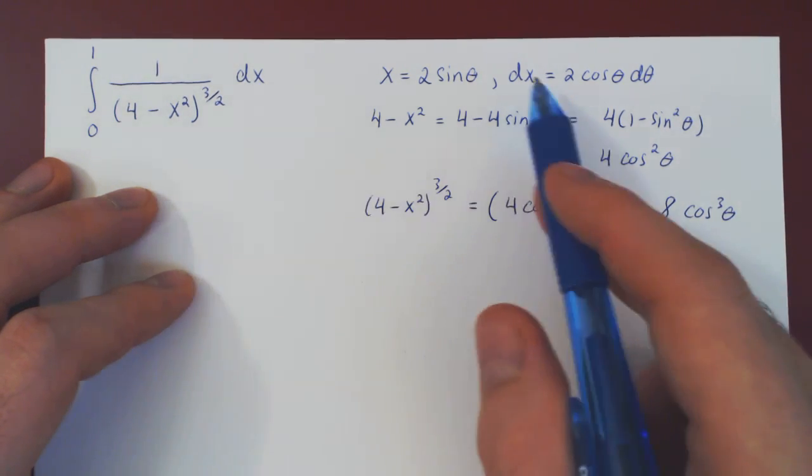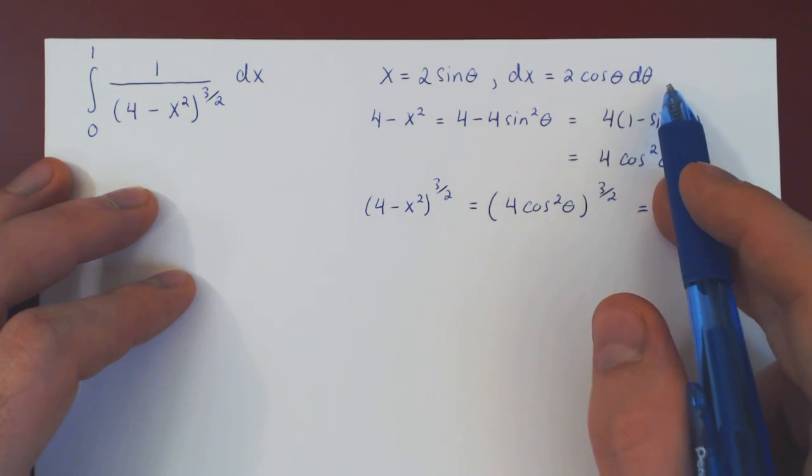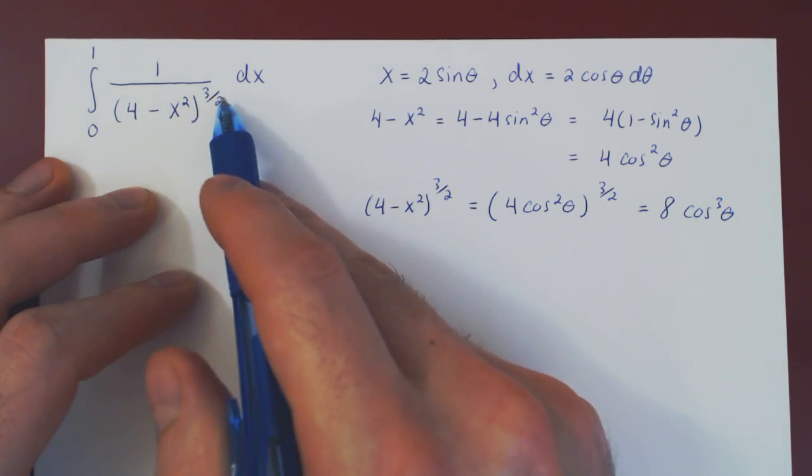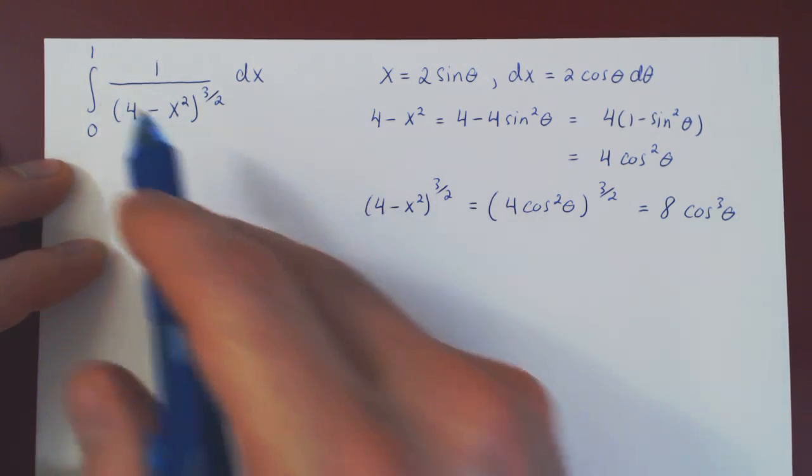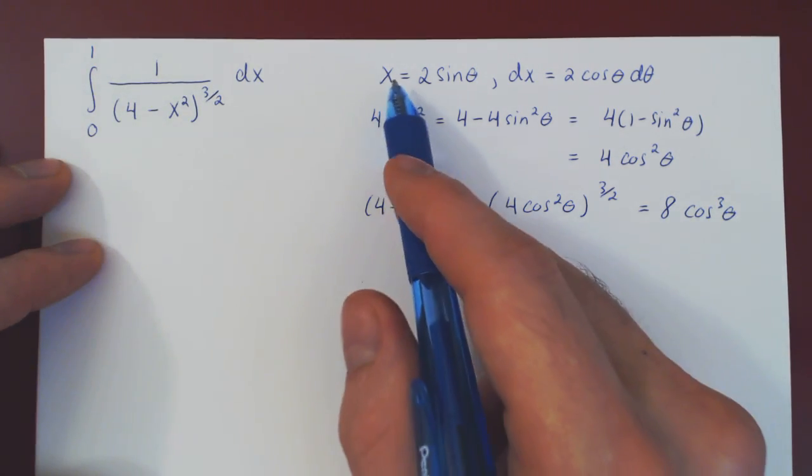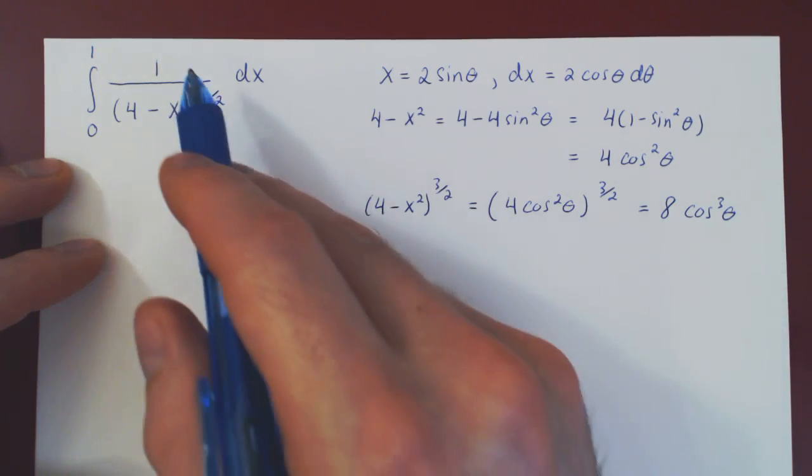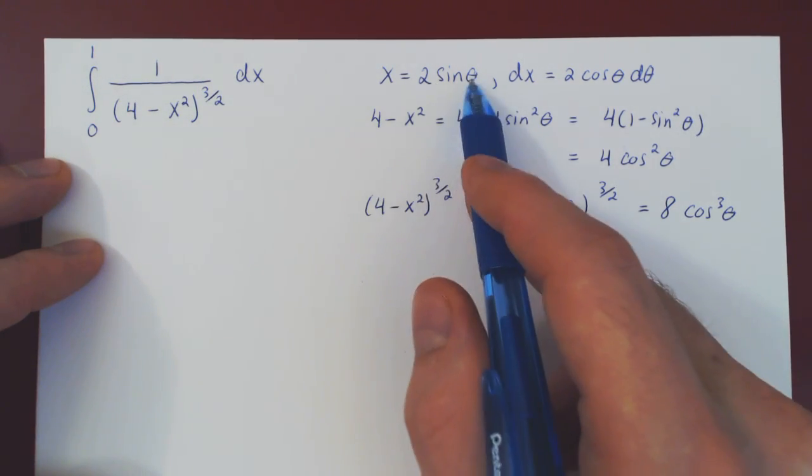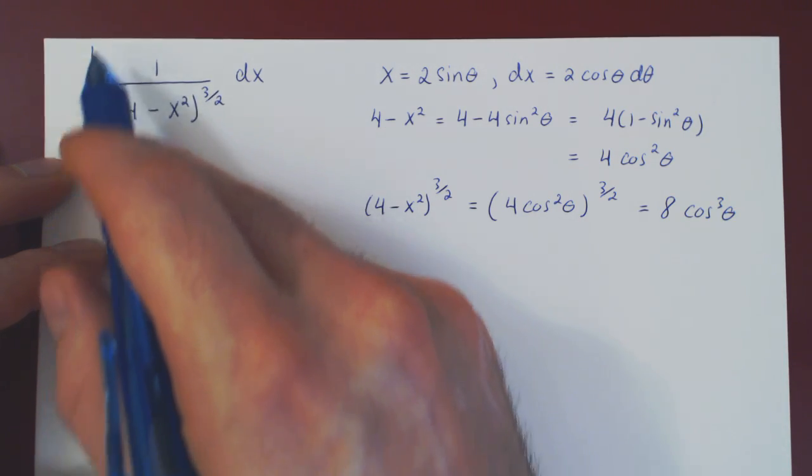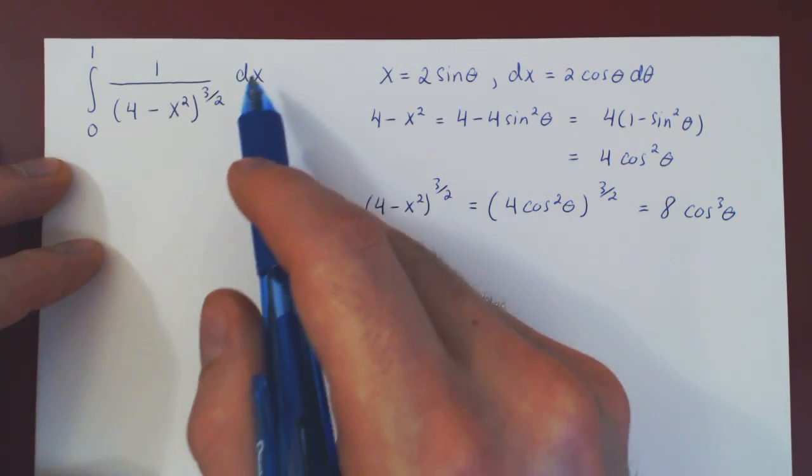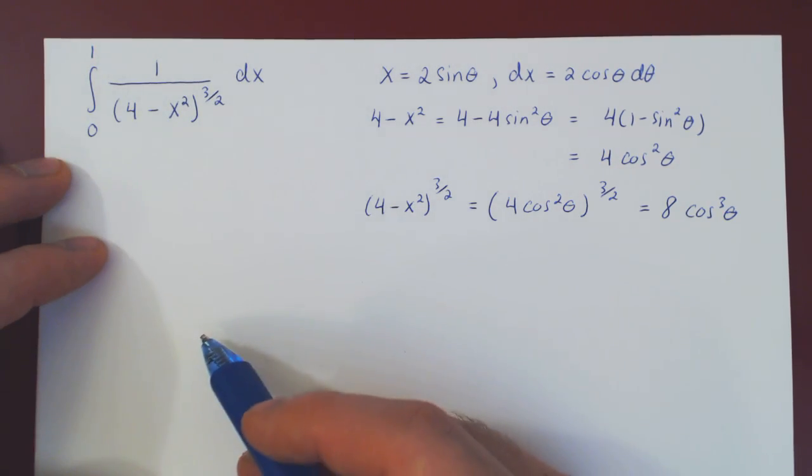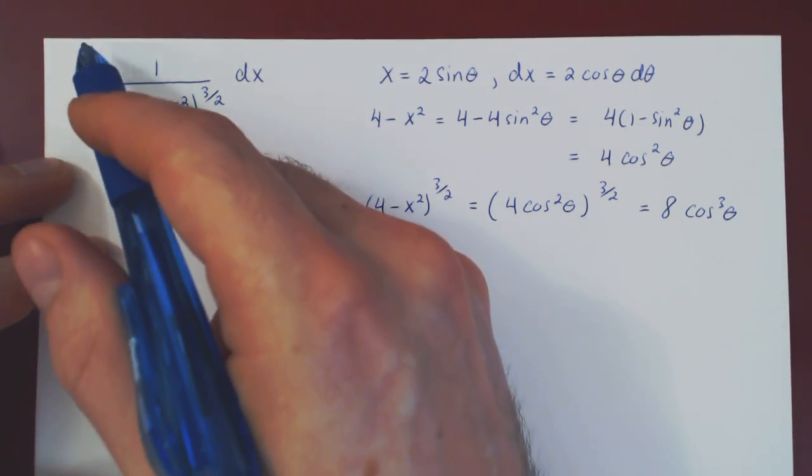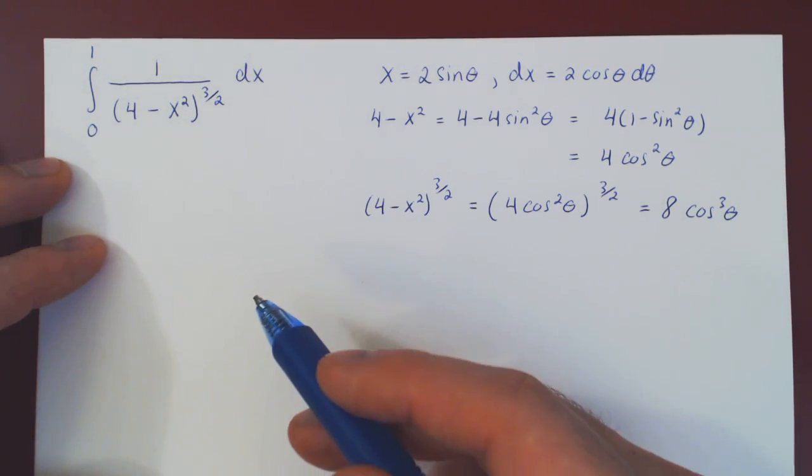So now we have our dx, 2 cos theta d theta. We have our denominator, which is simply 8 cos cubed of theta, but we're missing the bounds of integration, right? Once we make this substitution, the integral will become in terms of theta, and so the bounds must be in terms of theta, as those bounds are in terms of x. This is x equals 0, x equals 1. Well, let's ask, when x is 0 and 1, what is the value of theta?